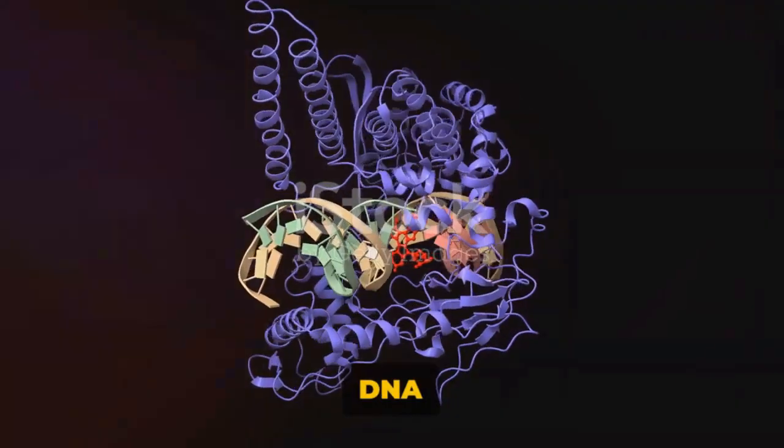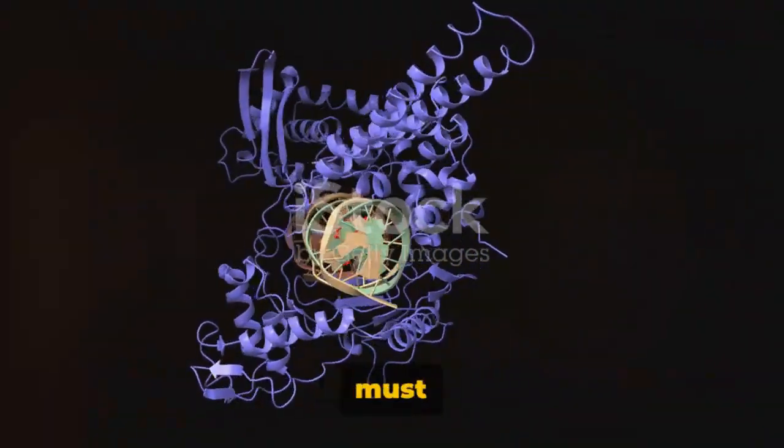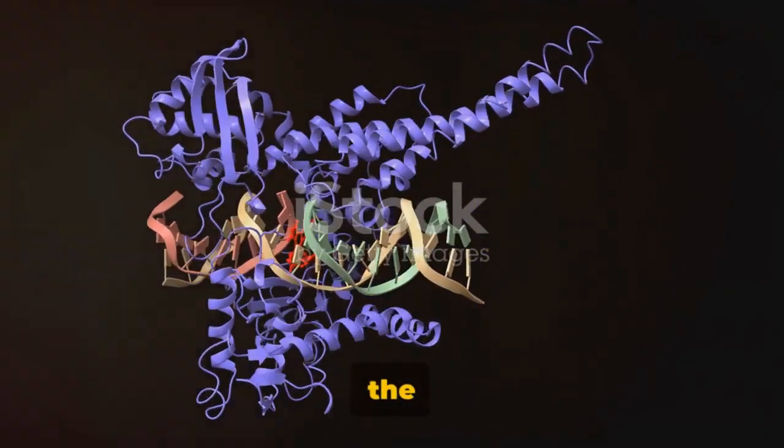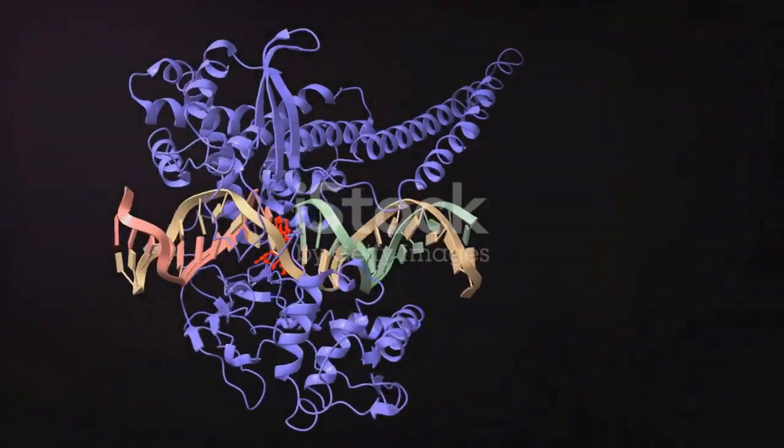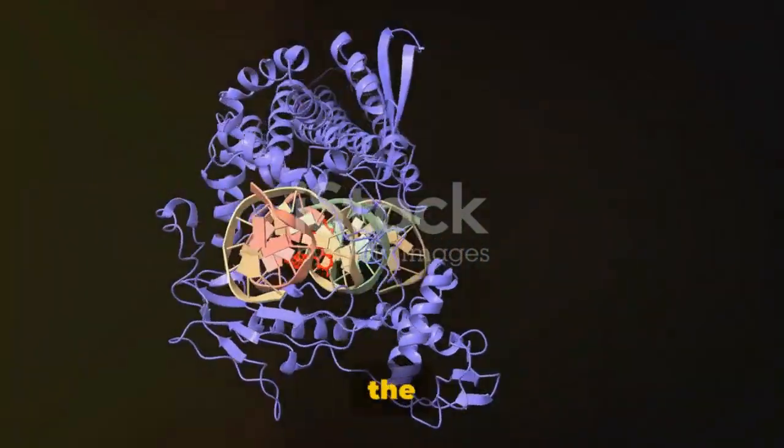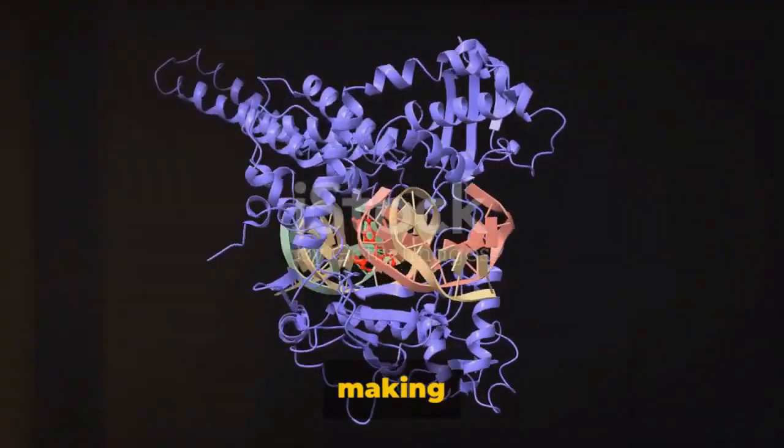Here's how they work. During DNA replication, the DNA strands must be separated in order for the replication machinery to do its job. This separation exposes the single strands of DNA, making them vulnerable.